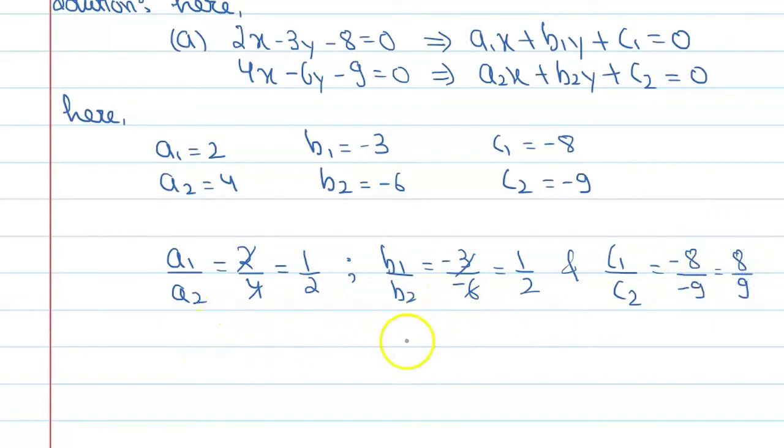So in comparing this ratio, we get A1 upon A2 is equal to B1 upon B2, but it is not equal to C1 upon C2. So in the very first option, that is option A, we get this condition. It means this is the only equation which is inconsistent.